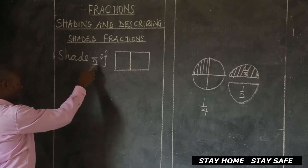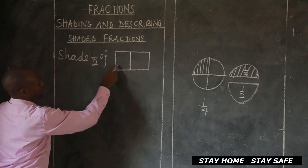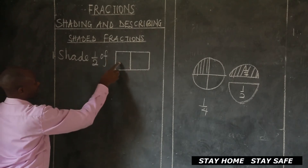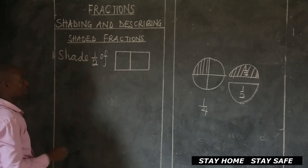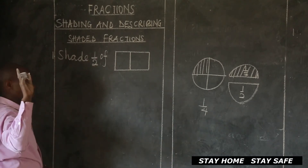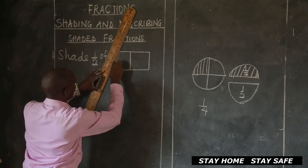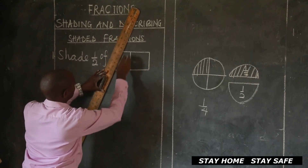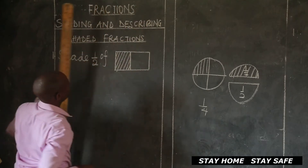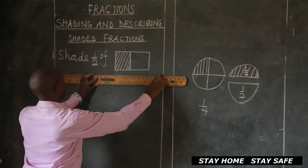The denominator down here represents the number of parts that we are supposed to have in the diagram. So we have one, two - there are two parts. But out of two you are supposed to shade only one. So I come and shade one part. In this case I have shaded a half.